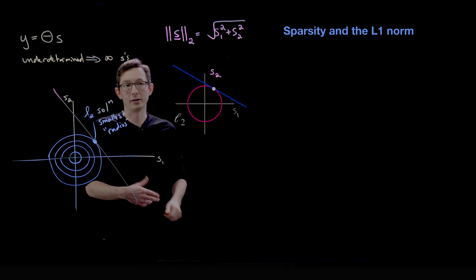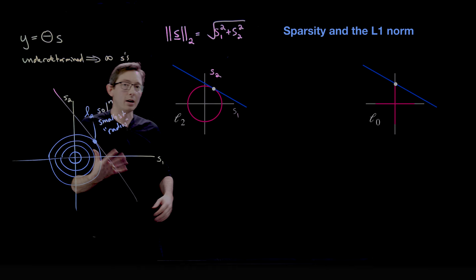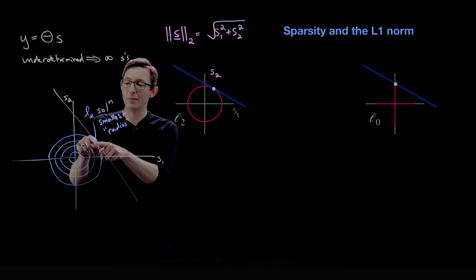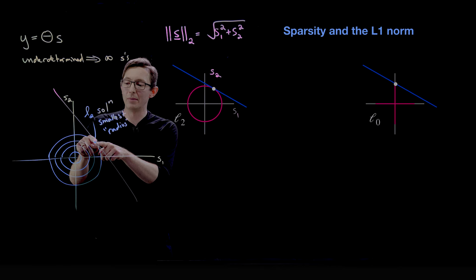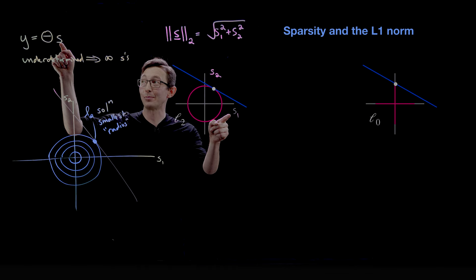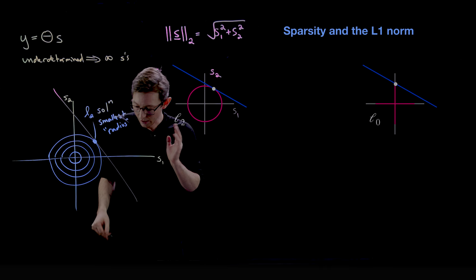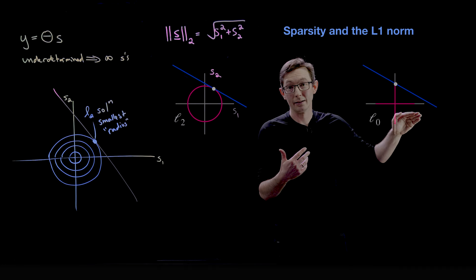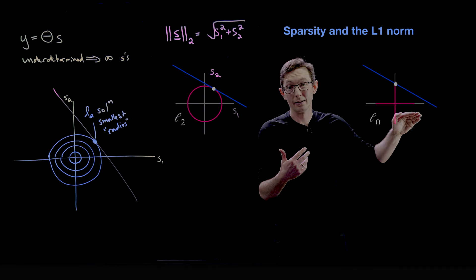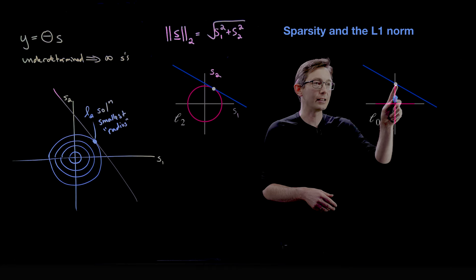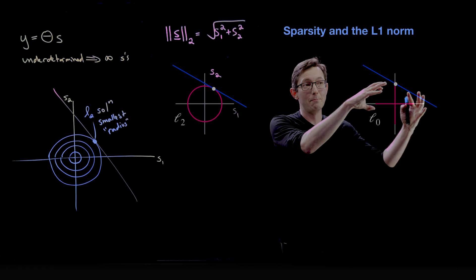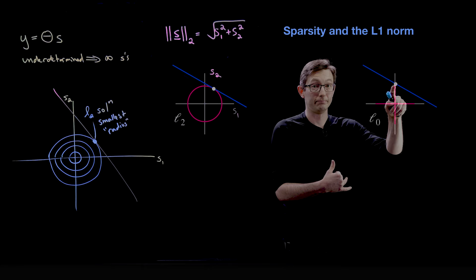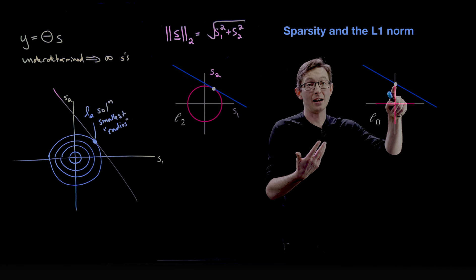What we actually want in compressed sensing is not the minimum two-norm solution — we want the sparsest possible s, with as many zeros as possible, that still satisfies the equation. That's achieved using the L0 norm, which would intersect this pink plus-sign shape with the blue solution set. The intersection points only in the s2 direction, so s1 equals zero — a sparse solution.